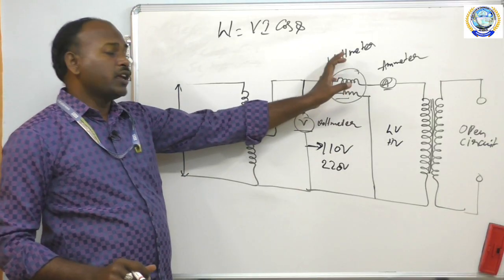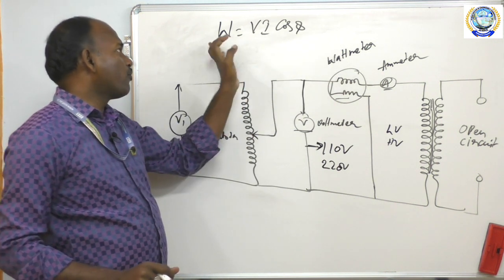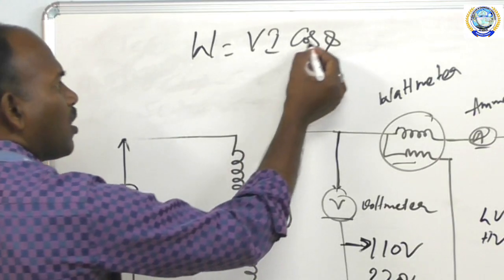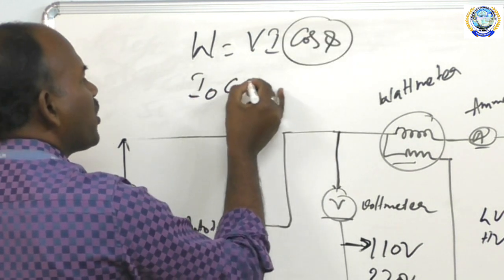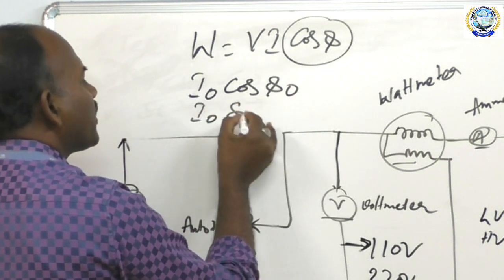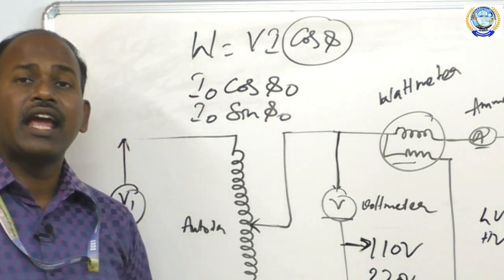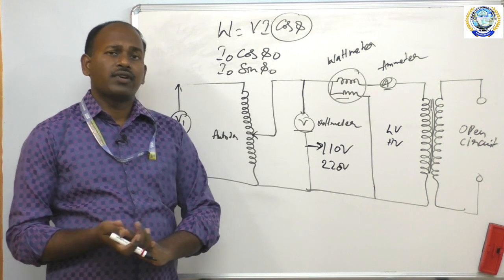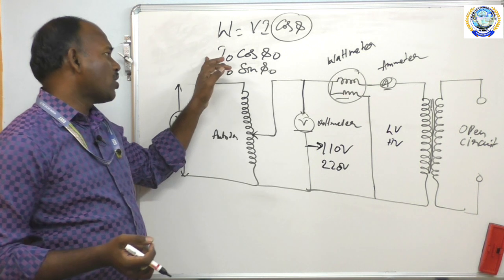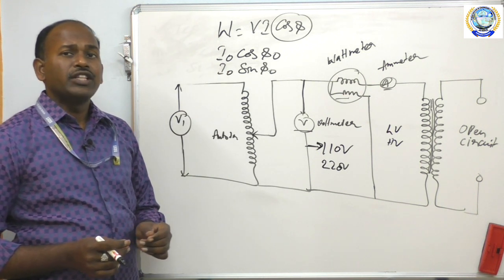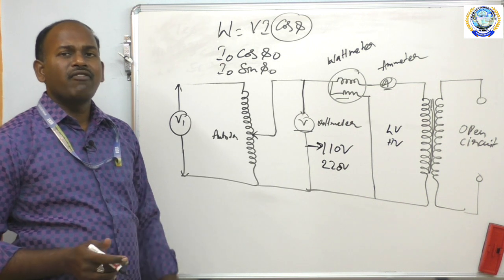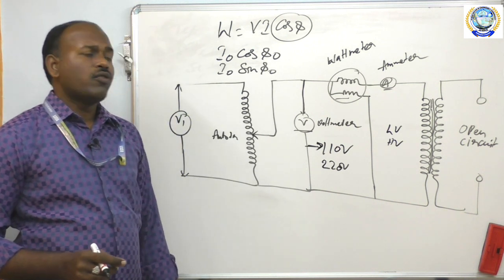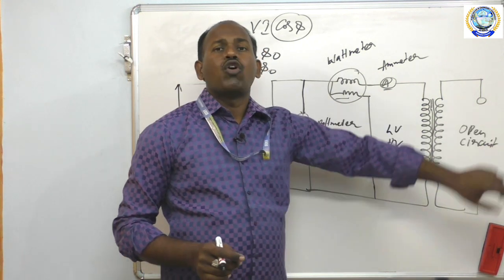From the wattmeter, voltmeter, and ammeter readings you calculate cos φ. Once you know cos φ, you calculate I0 cos φ0 (working component of current) and I0 sin φ0 (magnetizing component of current) — as previously discussed in the transformer no-load phasor diagram. By observing these two values you calculate the required loss values. In the open circuit test you obtain iron losses along with a small amount of copper losses, since the secondary side is open-circuited.